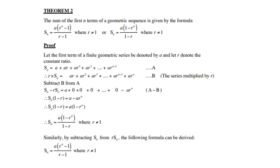The sum of the first n terms of a geometric sequence is given by: Sₙ = a(rⁿ - 1)/(r - 1), where r ≠ 1, or alternatively Sₙ = a(1 - rⁿ)/(1 - r), where r ≠ 1. Let the first term of a finite geometric series be a and let r denote the constant ratio. So Sₙ = a + ar + ar² + ar³ + ... + arⁿ⁻¹. We call this equation A, then multiply equation A by r.